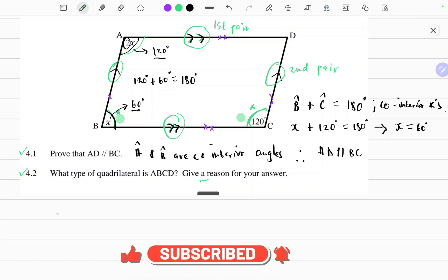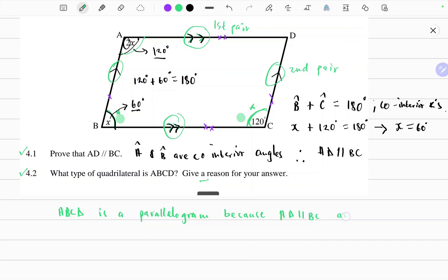So we can say ABCD is a parallelogram because AD is parallel to BC and AB is parallel to DC.